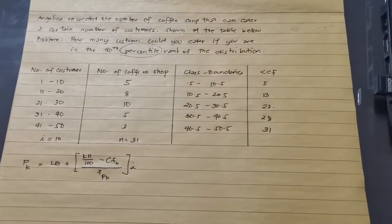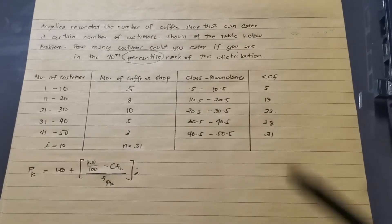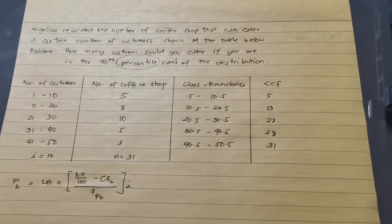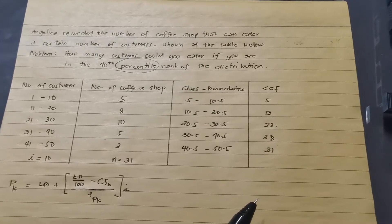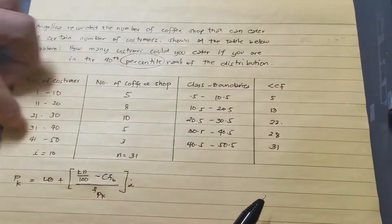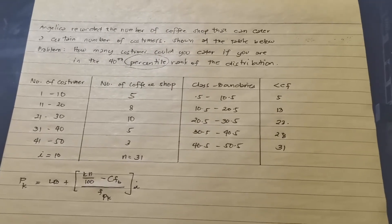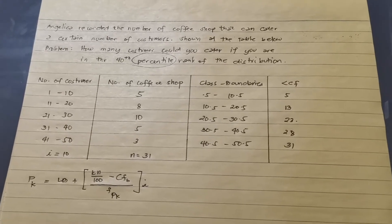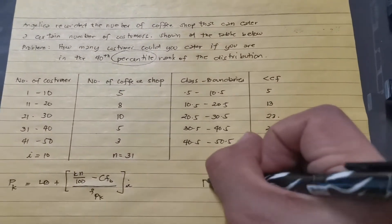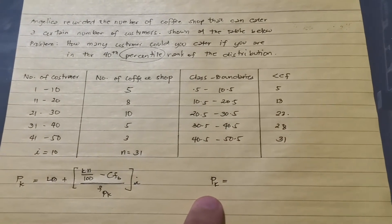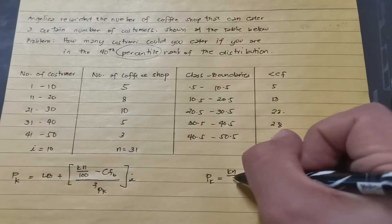As soon as we have our formula, we will substitute the values. We need class boundaries and the less-than cumulative frequency. First, we need to locate where the 40th percentile falls — which interval contains P40. To do that, we compute P sub K equals K times N over 100.